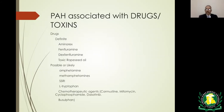Pulmonary hypertension associated with drugs and toxins: historically, weight-reducing medications such as fenfluramine and dexfenfluramine were implicated. Other drugs include amphetamine, methamphetamine, and some chemotherapeutic agents such as carmustine, mitomycin, and dasatinib.